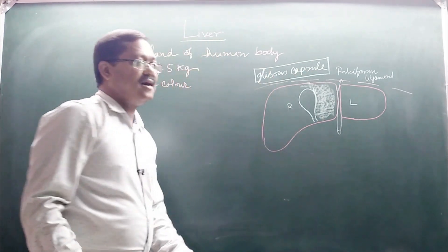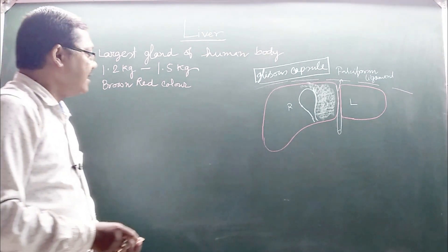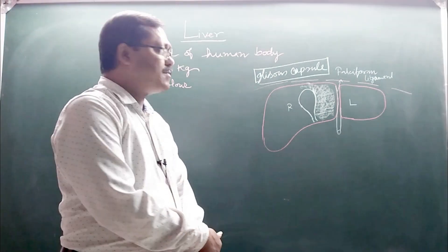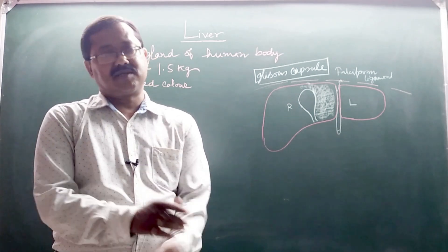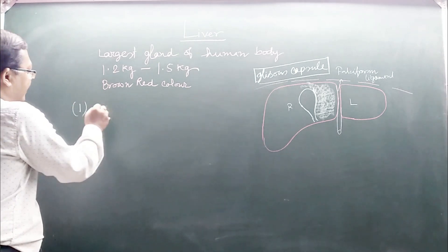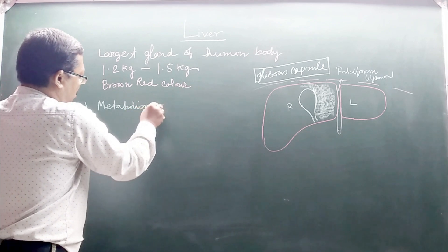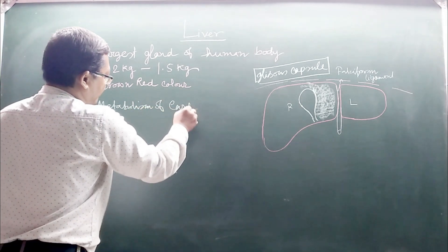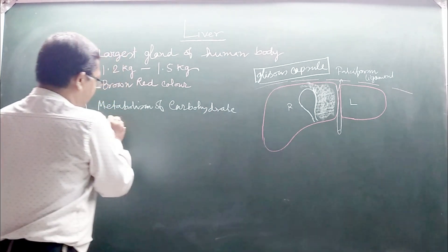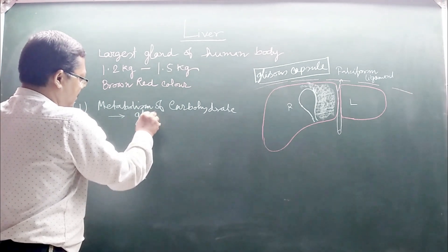Now, what are the important functions of the liver? The liver is the major organ of our body. The first function is the metabolism of carbohydrate — they form glycogen by the process of glycogenesis.